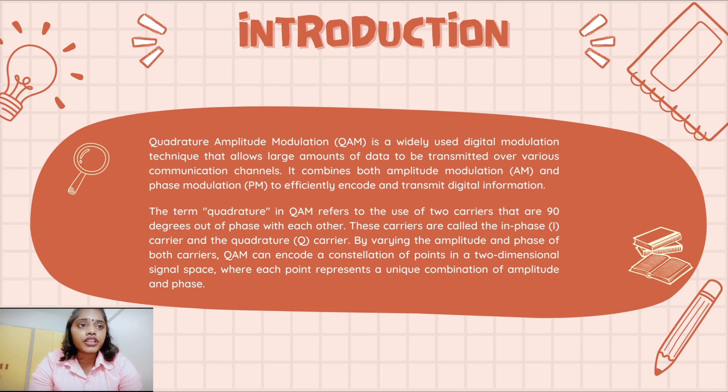The term Quadrature refers to QAM because of the use of two carriers that are 90 degrees out of phase with each other. These carriers are called in-phase I carrier and the Quadrature Q carrier. By varying the amplitude and phase of both carriers, QAM can encode a constellation of points in two-dimensional signal space where each point represents a unique combination of amplitude and phase.